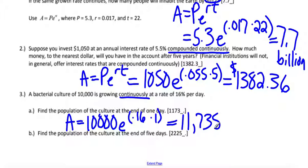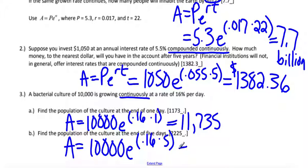And then at the end of five days, we're going to use that PERT equation again. 10,000E to the 0.16. And this time we're going to let them sit there for five days. Plug that into your calculator, 10,000E. Remember that the calculator put those parentheses in there for you. And we have 22,255.